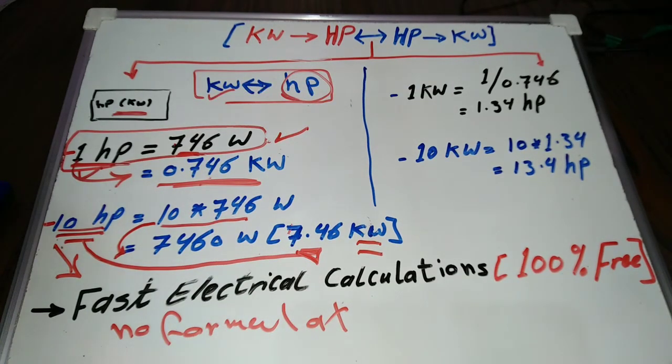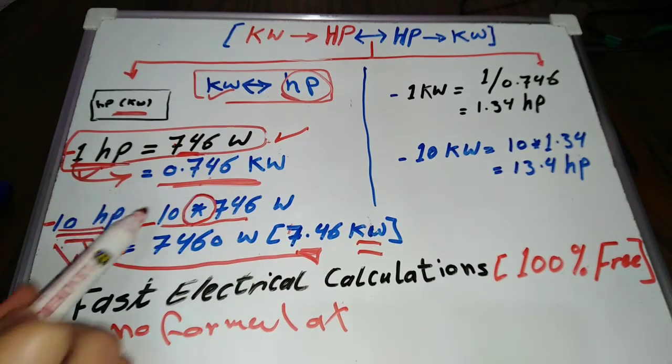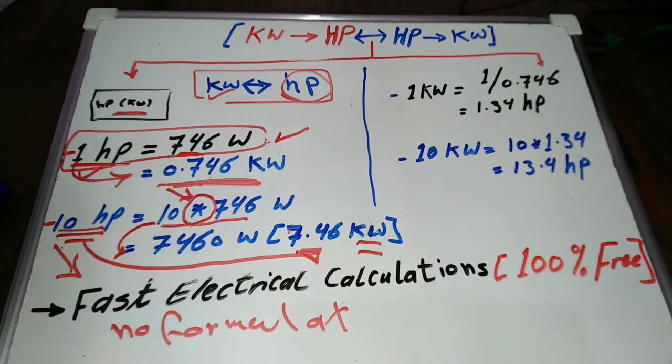So it's clear that to convert horsepower to kilowatt we simply multiply the horsepower value by 0.746.